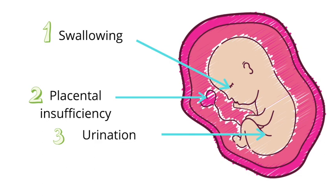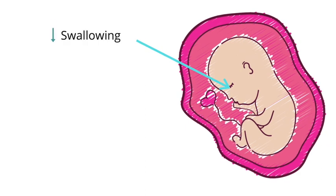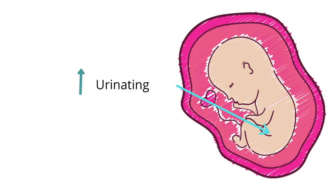It's influenced by three main things: swallowing, placental insufficiency, and urinating. Swallowing causes the amniotic fluid to leave the amniotic sac and enter the fetus, so swallowing decreases the amniotic fluid. Urinating does the opposite — urinating adds to the amniotic fluid. Some people even say the amniotic fluid is basically just a sack of the baby's pee, so more urination equals more amniotic fluid.